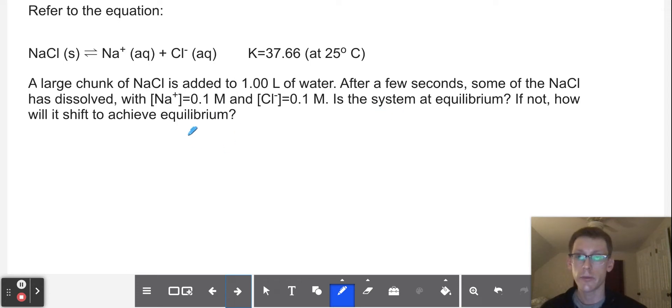Is the system at equilibrium? So we're going to say that Q is equal to the concentration of the products, which is Na+ concentration and Cl- concentration, over the reactants. Except wait, the reactant is solid, so forget it. We're only going to deal with these aqueous ions. So this is equal to 0.1 molar squared, because they're both the same. Sodium 0.1 molar and chloride 0.1 molar.